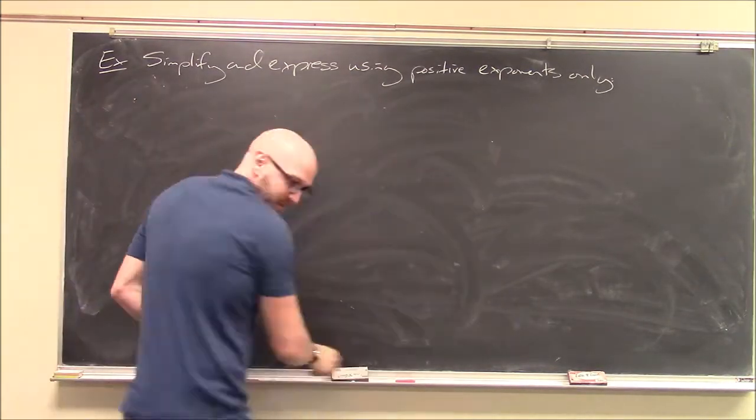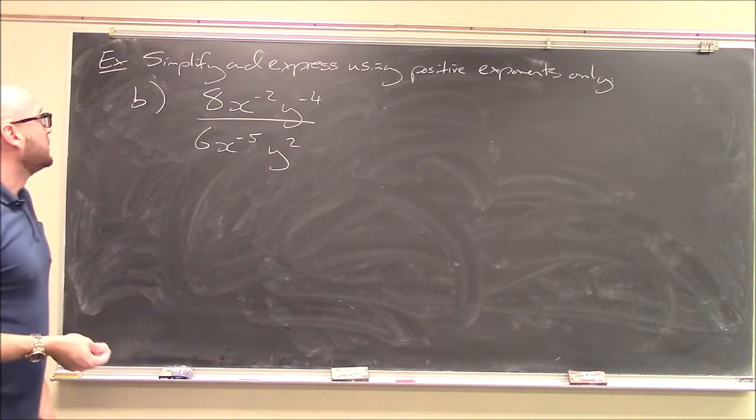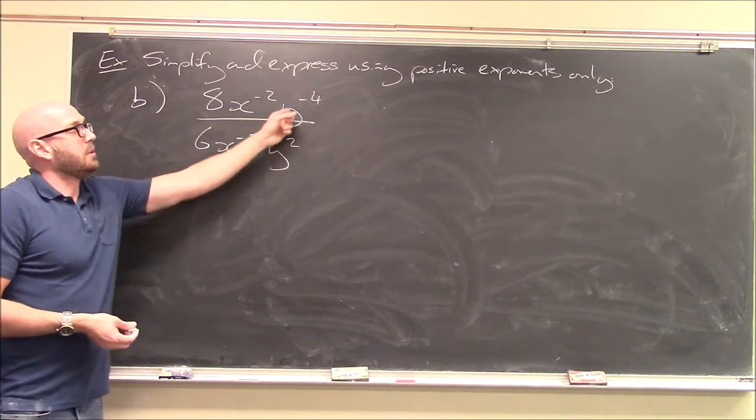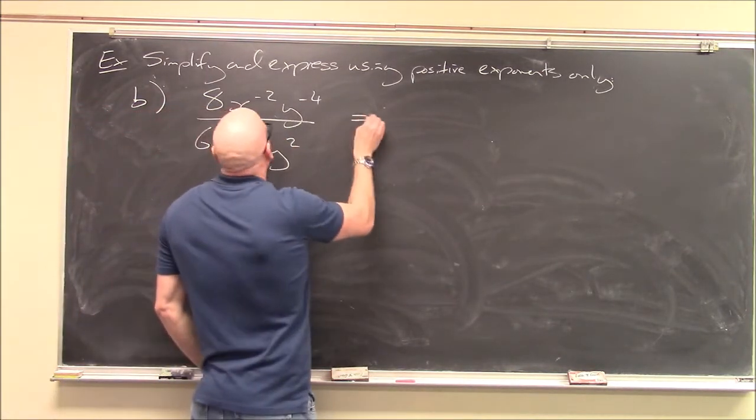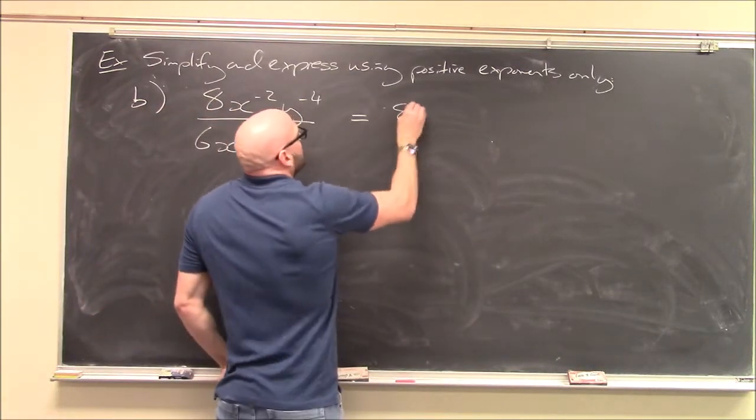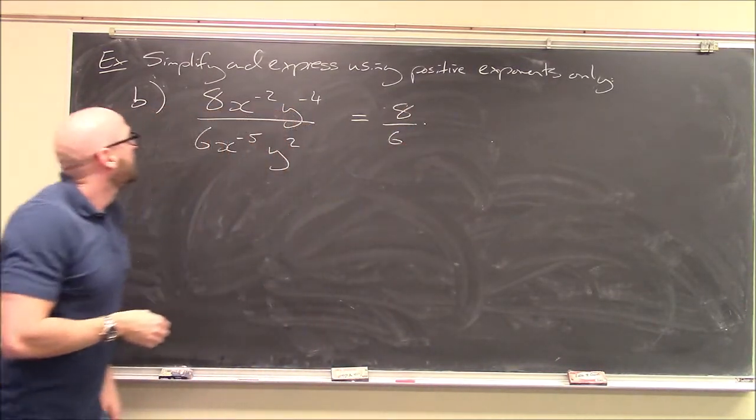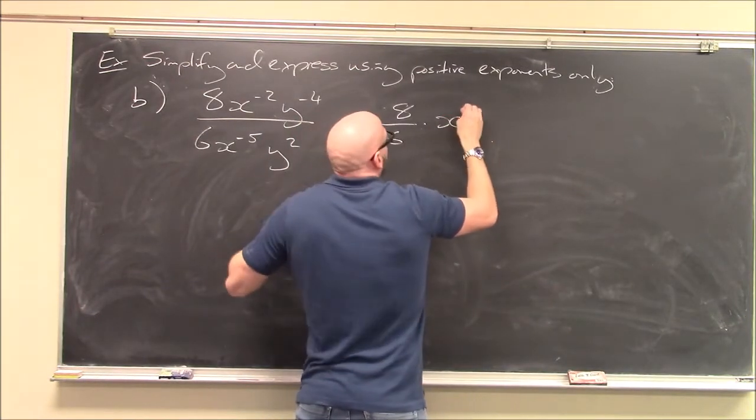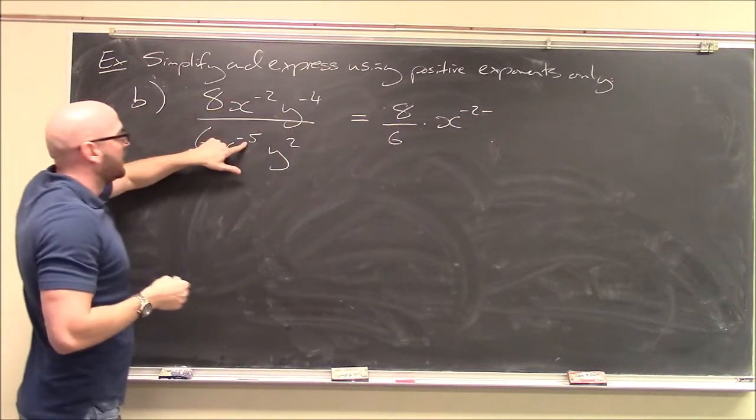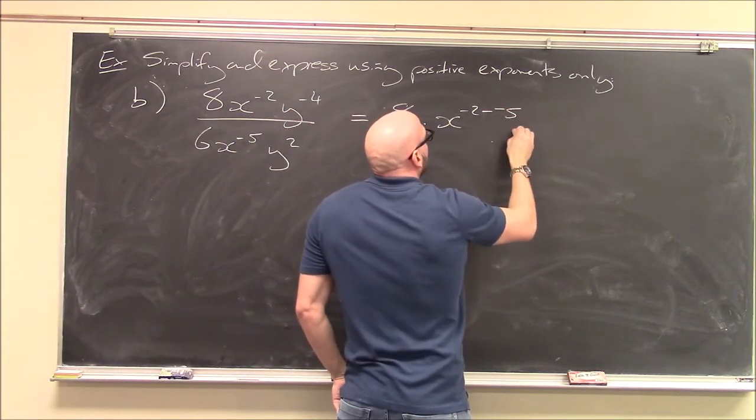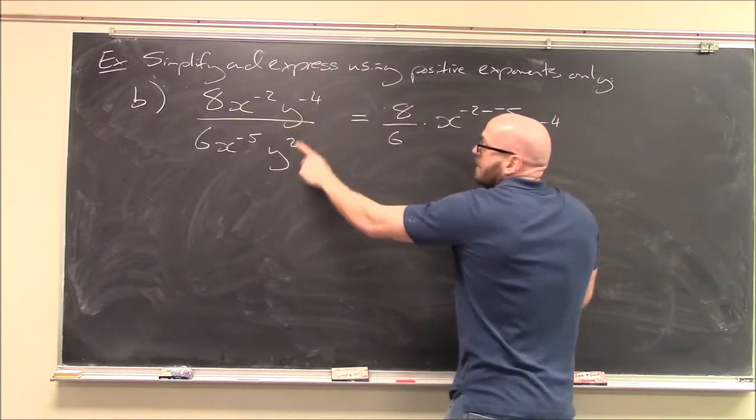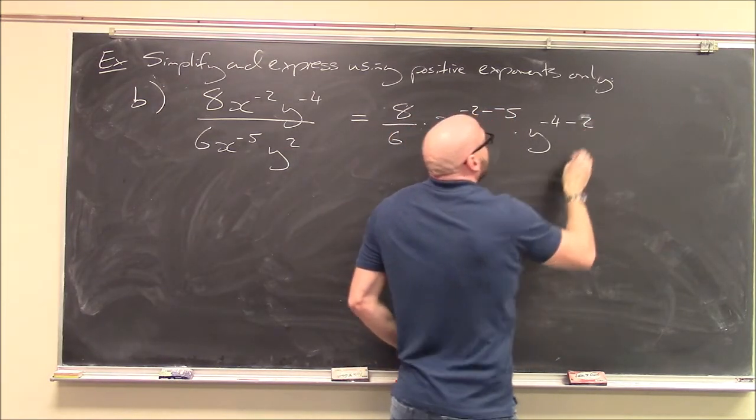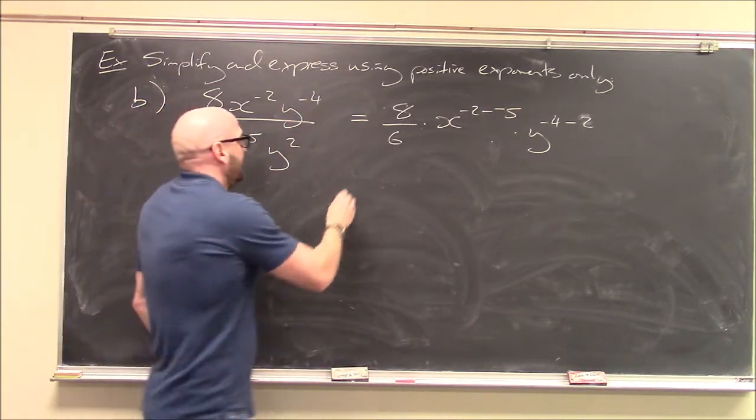Let's do another one. Alright, really similar to the one we just did, just with more terms thrown in. Again, I've got x's on top and the bottom, I've got y's on top and the bottom, so let's sort of group all of our x's and y's together. Let's see, I've got 8 over 6, let's just leave this alone for now, 8 over 6, but then what do I have? We've got x minus 2 divided by x minus 5. So again, how do we handle division? We subtract, right? So this is x to the minus 2 minus the bottom exponent minus minus 5. And then I've got y to the minus 4 minus the bottom exponent, so minus 2. Here, notice I don't have a double negative, it's just minus the exponent minus 4 minus 2.